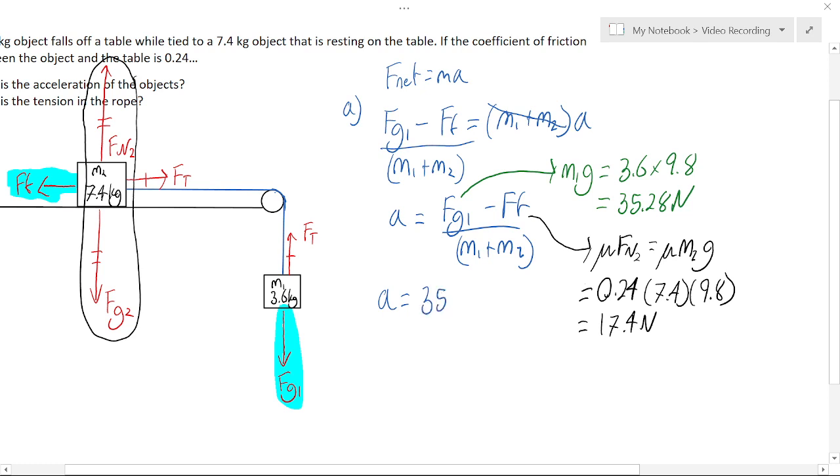We have 35.28 is our winning force. We have 17.4 is our losing force, the friction. We have 3.6 is our m1 and 7.4 is our m2.